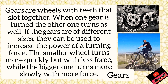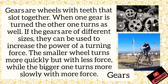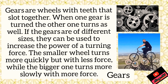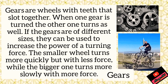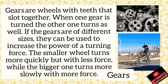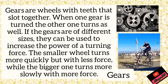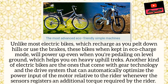The smaller wheel turns more quickly but with less force, while the bigger one turns more slowly with more force. The number of teeth are very important in both the wheels. The number of wheels can also be increased — it's up to our requirement how we increase the number of wheels or their teeth, depending on the mechanical advantage needed.